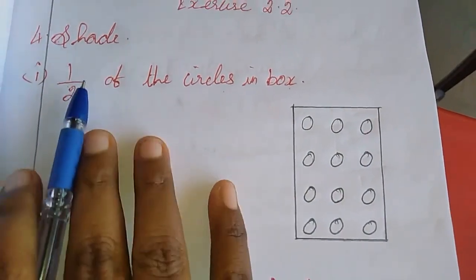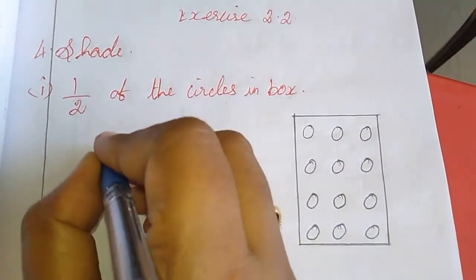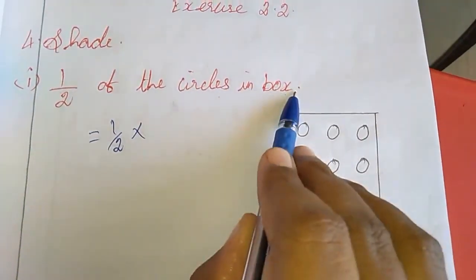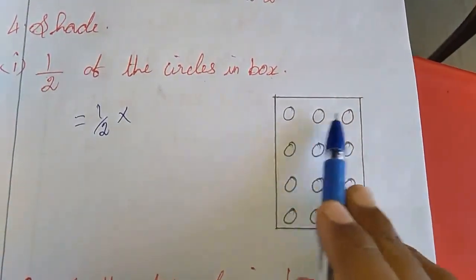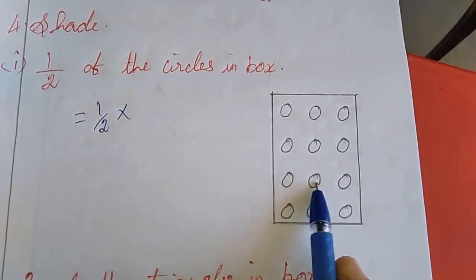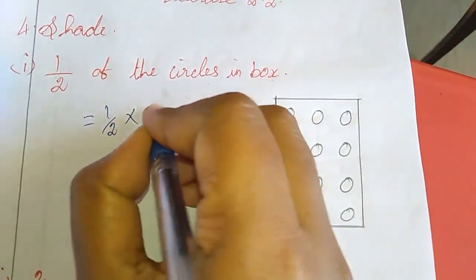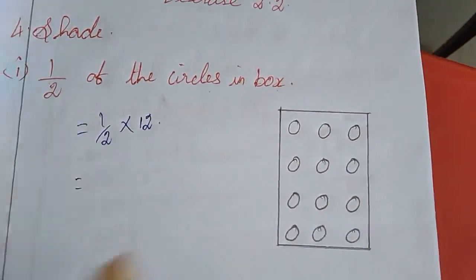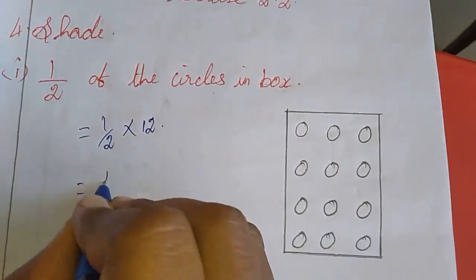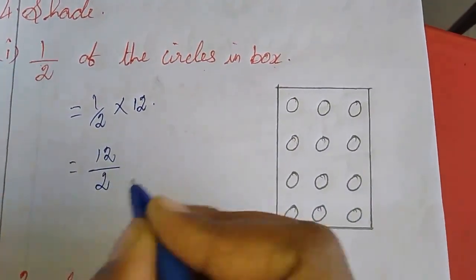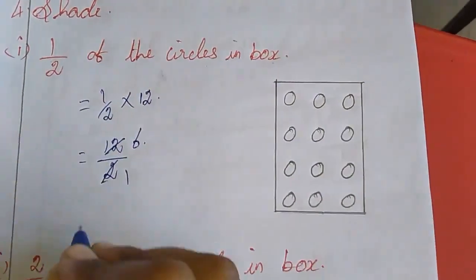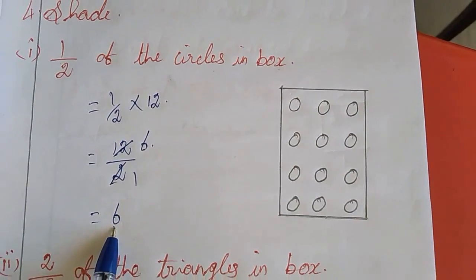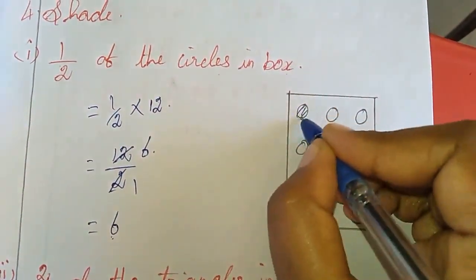I am going to convert this line as a sum. 1 by 2 of means multiplication. The circles in box — that means the number of circles in the box you have to count: 1, 2, 3, 4, 5, 6, 7, 8, 9, 10, 11, 12. So 1 by 2 into 12. You can cancel: 12 divided by 2 gives 6. So you want to share 6 circles in the box.